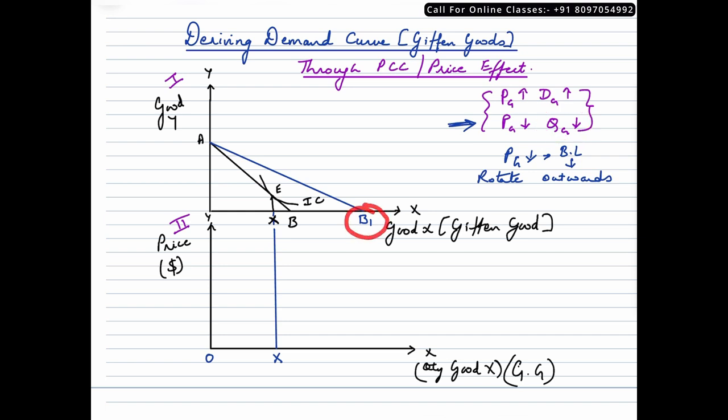So on this new budget line, which is AB1, if we make the indifference curve somewhere here, the consumer would end up consuming this much of commodity X, which is much greater than the earlier scenario. That means we cannot have an indifference curve here. Why? Because the quantity of this Giffen good consumed by the consumer is supposed to go down. That means it has to be somewhere in this region.